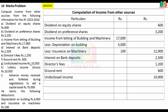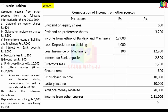Director fee Rs.1,200, ground rent Rs.600, undisclosed income Rs.10,000, lottery income Rs.10,000 (gross up), advance money forfeited Rs.70,000. Total income from other sources = Rs.1,11,000.